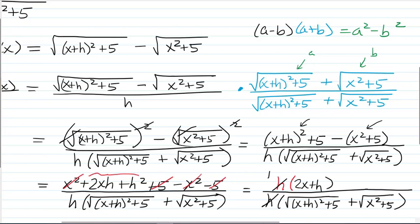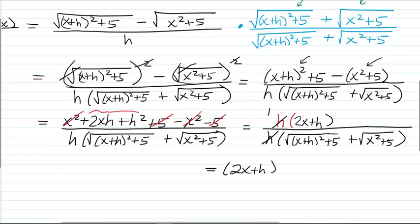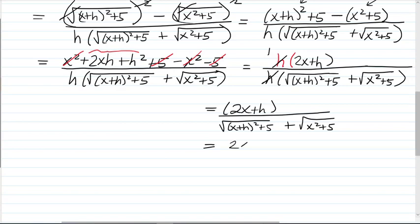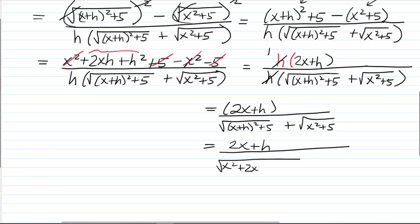And we're left with 2x plus h over the square root of x plus h squared plus 5 plus the square root of x squared plus 5. Or if MyMathLab wants you to multiply out that x plus h squared, you could also write it as the square root of x squared plus 2xh plus h squared plus 5 plus the square root of x squared plus 5.